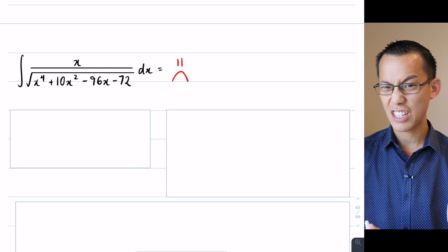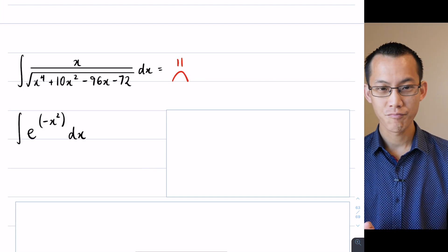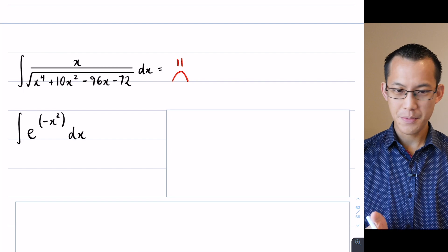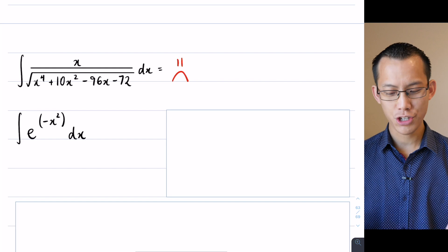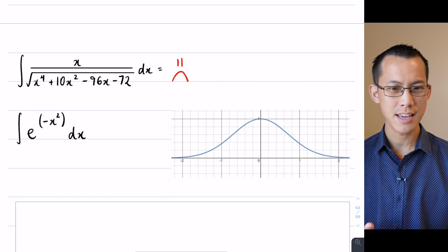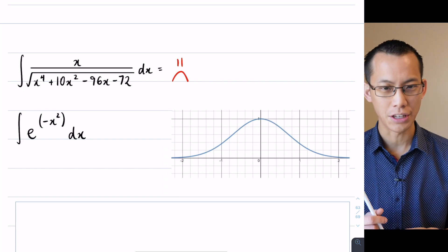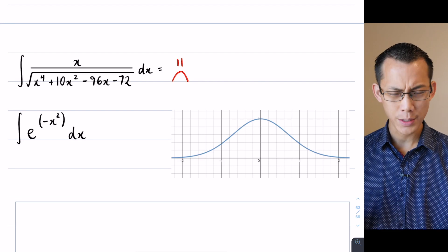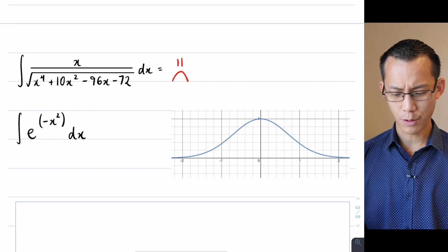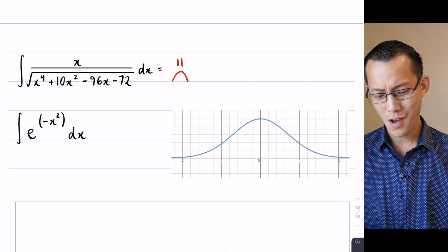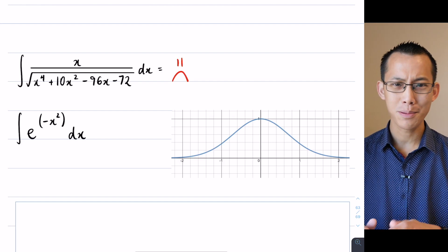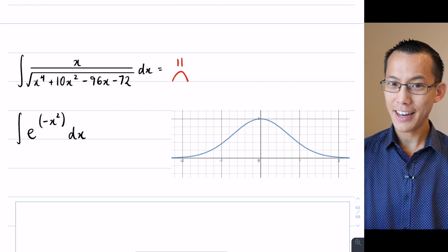But even functions that look much less intimidating, like this, this also, this second function here, e to the negative x squared, just can't be integrated, which is surprising when you look at what the function is. There's actually a famous function, it's called the Gaussian function, it's really important in statistics which we're going to return to again later on. Even though this function looks nice and neat and tidy and not complicated at all, again, you can't integrate it.